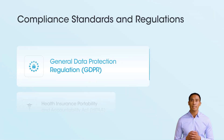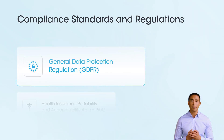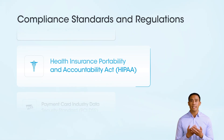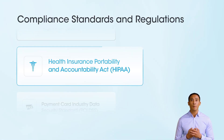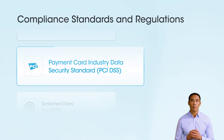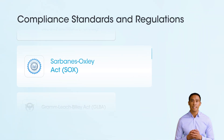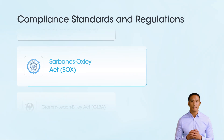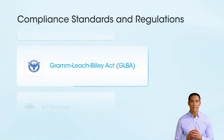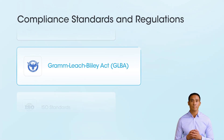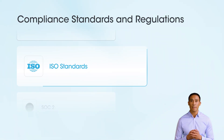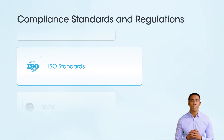GDPR mandates strict guidelines for handling EU citizens' personal data; classification ensures compliance with data minimization, accuracy, and security principles, reducing legal risks. HIPAA requires classifying protected health information (PHI) to safeguard patient data and ensure it's only accessible by authorized personnel. PCI DSS mandates the classification and protection of payment card information to prevent breaches and secure transactions. SOX necessitates classifying financial records to ensure accurate, secure financial reporting and protect against unauthorized access. GLBA requires financial institutions to classify and secure customer data, ensuring compliance with privacy and security provisions. ISO/IEC 27001 and ISO 27002 provide frameworks for data classification and security controls, aligning with robust information security management systems.